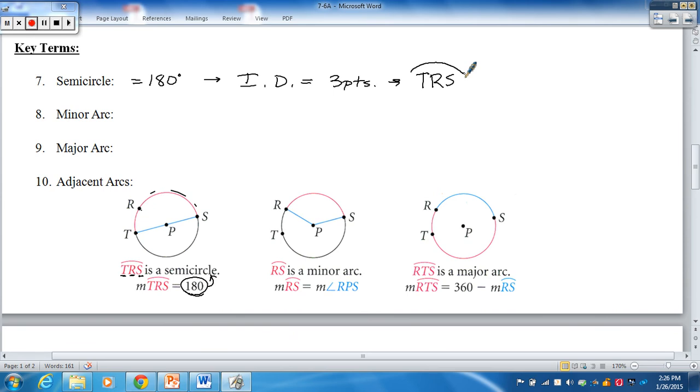A minor arc, as you would expect, is going to be less than 180 degrees. If you look down here, RS is a minor arc. TR is a minor arc. And so it's less than 180 degrees, obviously greater than zero degrees. And the identification of the minor arc is going to be two points. RS would be a good example. Notice how I do my arc. And then TR would be another example.